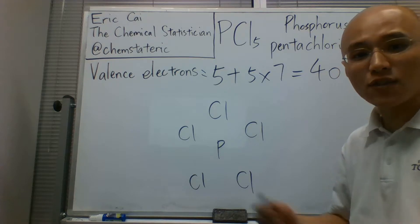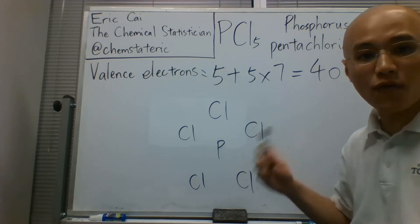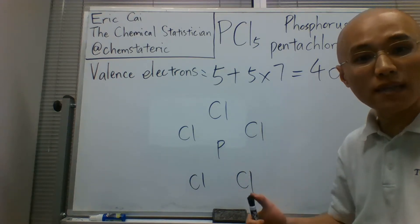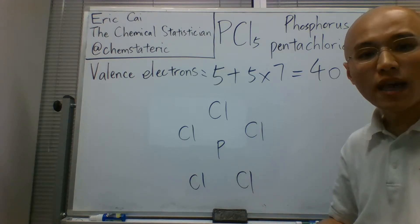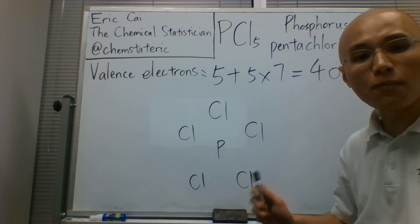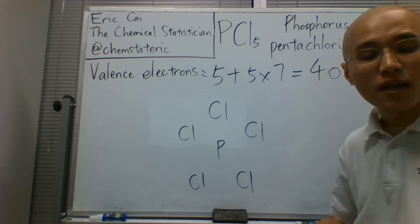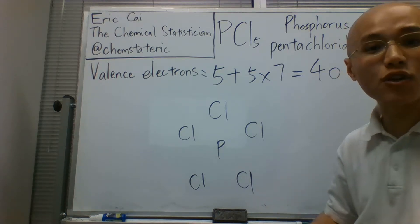Now that we have the structure, let's distribute those 40 electrons. We begin with the bonds, and I assume that the bonds are single bonds. That is not always true, but it's a good starting point.